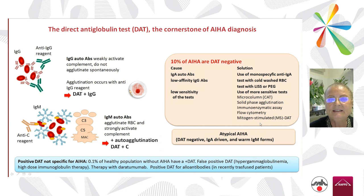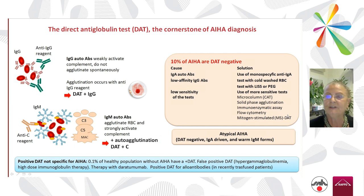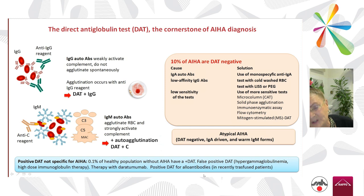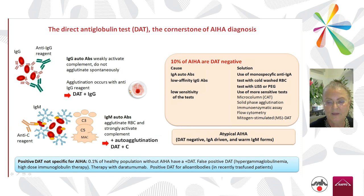The direct antiglobulin test, the cornerstone of diagnosis, is not always positive — about 10% of autoimmune hemolytic anemias are DAT-negative, and more sensitive techniques may be needed. It is also important to note that positivity is not specific for the diagnosis, as it can occur in healthy populations, in patients treated with immunoglobulins, in the presence of hypergammaglobulinemia or paraproteins, during therapy with daratumumab, and in recently transfused patients.